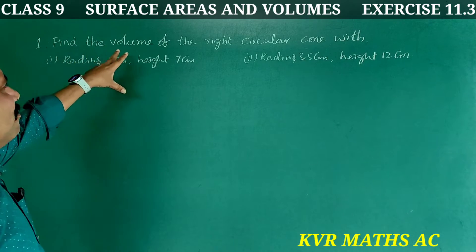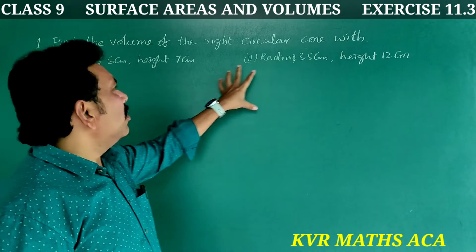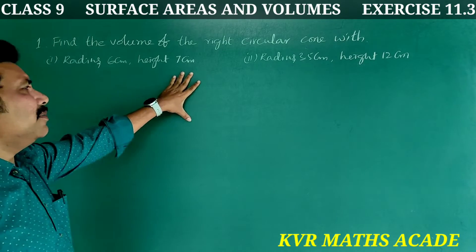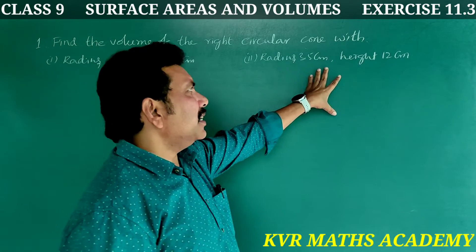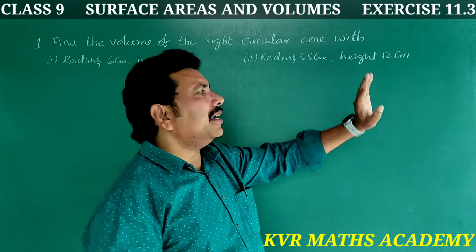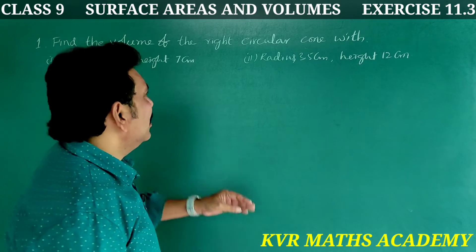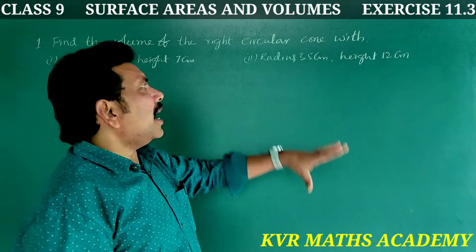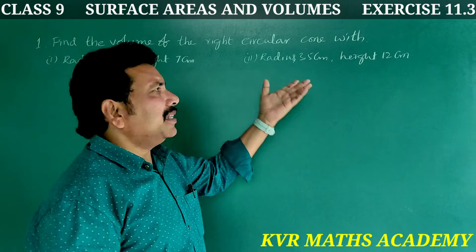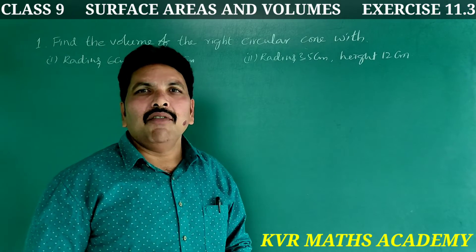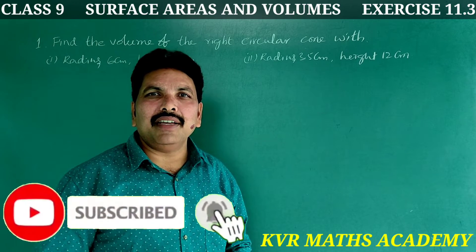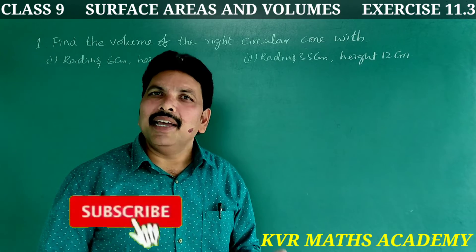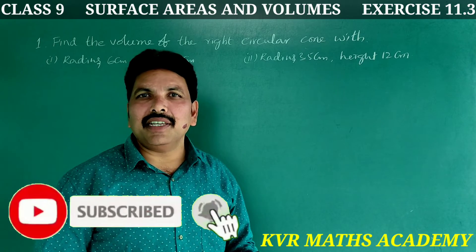First question: Find the volume of the right circular cone with radius 6 cm and height 7 cm, and also with radius 3.5 cm and height 12 cm. Find the volumes of the right circular cones with the given measurements. The volume of a right circular cone is (1/3)πr²h — that's what we have to find.